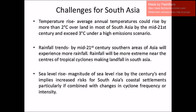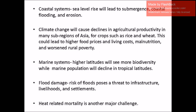Here I am describing the challenges South Asian countries are facing. Regarding temperature rise, average annual temperatures could rise by more than 2°C over land in most of South Asia by the mid-21st century, and exceed 3°C under a high emission scenario. Regarding rainfall trends, by mid-21st century South Asia will experience more extreme rainfall near the centuries of tropical cyclone landfalls. Regarding sea level rise, the magnitude of sea level rise implies increased risk for South Asian coastal settlements, particularly combined with changes in cyclone frequency or intensity.